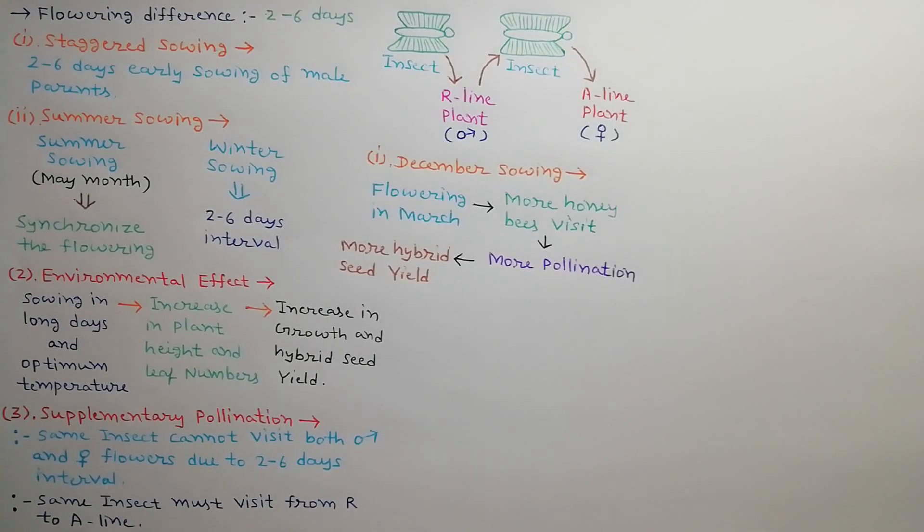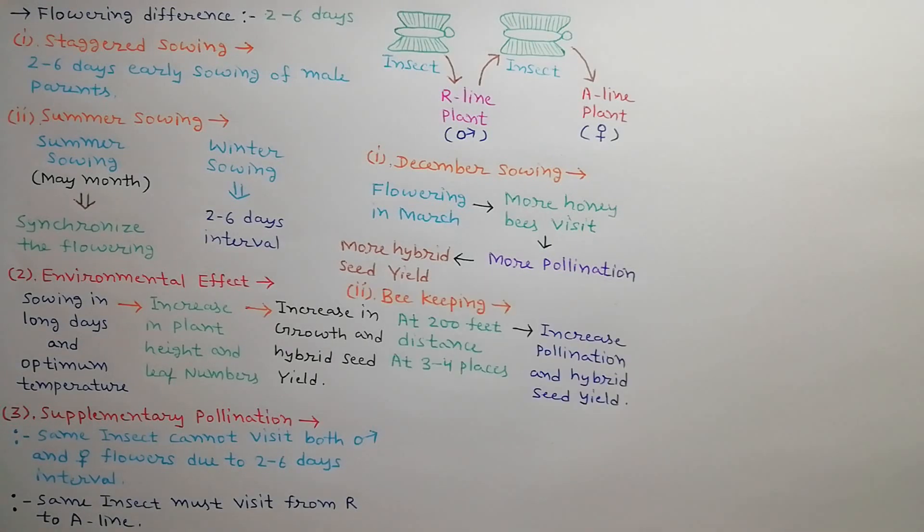December sowing produces flowering in March. More honey bees visit the flowers during this month which increases the pollination percentage and also increases the hybrid seed yield. Beekeeping at 200 feet distance at 3 to 4 places in the field during flowering period also increases the pollination percentage as well as hybrid seed yield.